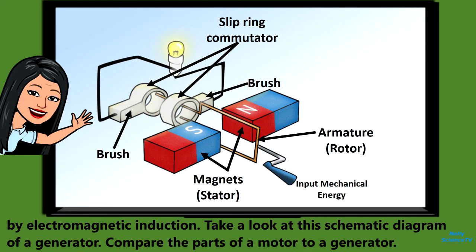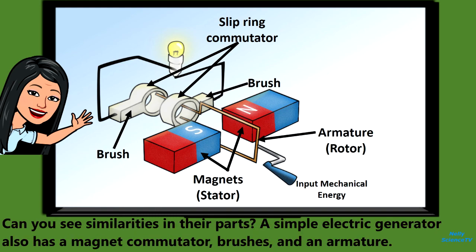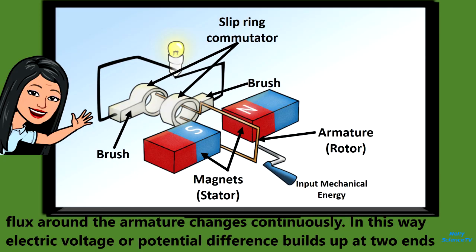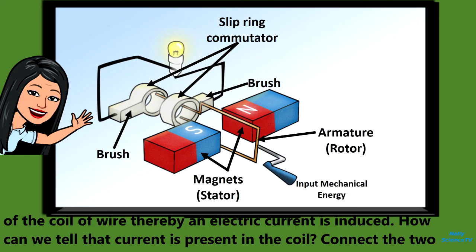Generators work by electromagnetic induction. Take a look at this schematic diagram of a generator. Compare the parts of a motor to a generator. Can you see similarities in their parts? A simple electric generator also has a magnet, commutator, brushes, and an armature. When the armature rotates between the poles of the magnet upon an axis perpendicular to the magnetic field, the magnetic flux around the armature changes continuously. In this way, electric voltage, or potential difference, builds up at the two ends of the coil of wire, and thereby an electric current is induced.